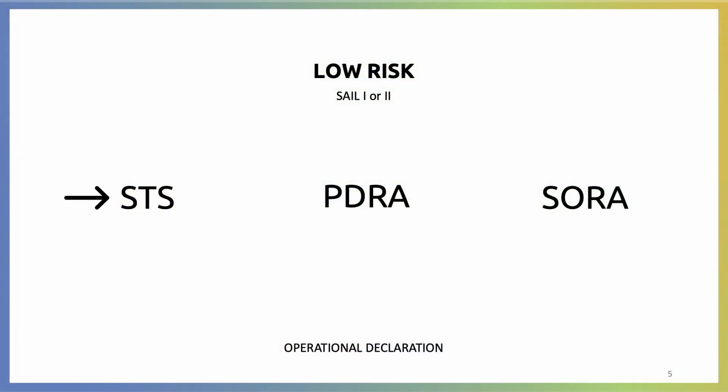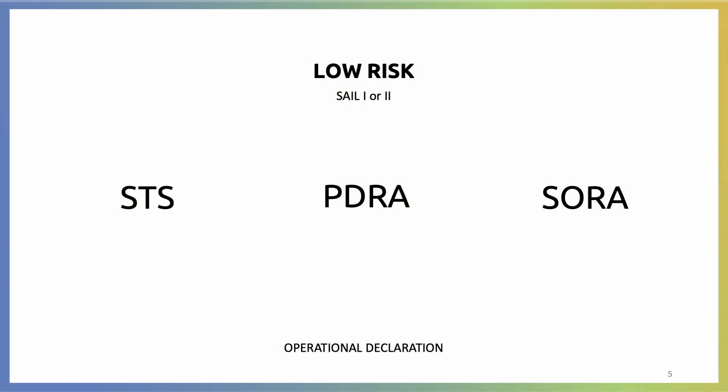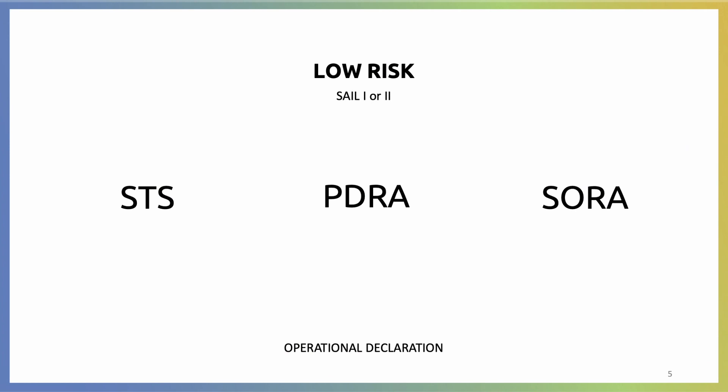What happens if your operation falls into the low category class? If you're flying in the low category class, you may encounter what we call the Standard Scenario, STS. These are evaluations already made by EASA, and they establish a set of rules or limitations like safety distances, flight height, documentation, training requirements, etc. With the STS, you no longer have to submit documentation to EASA or your national authority — you just have to declare that you comply with all the requirements published in the standard scenario.